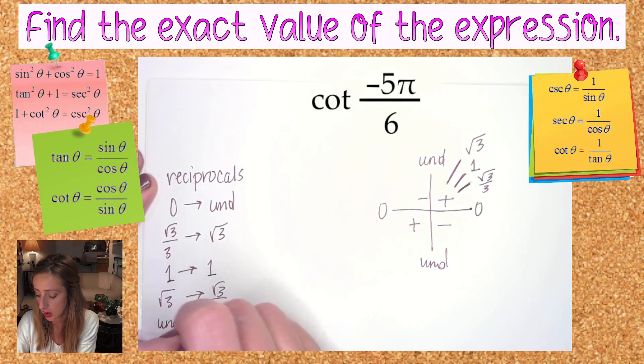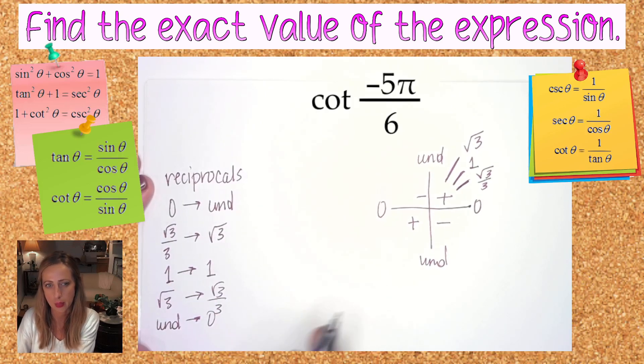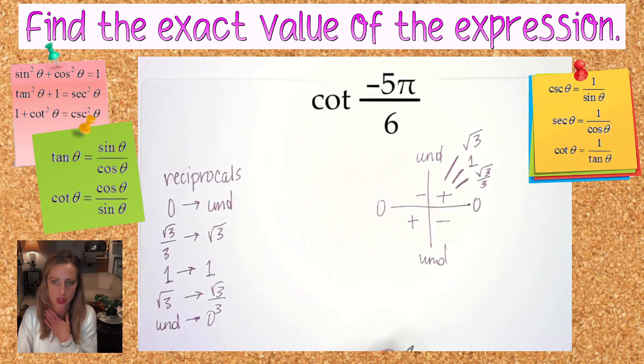The reciprocal of undefined is zero. So if tangent equals any of those things, that means that cotangent is simply the reciprocal. Reciprocals do not change signs—they don't become positive or negative just because they're reciprocal. They are the same sign.